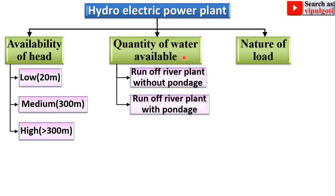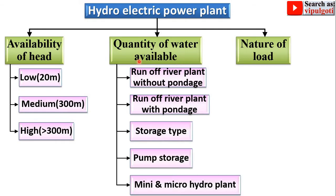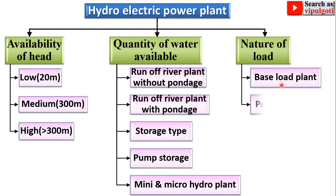According to the quantity of water available, it is further classified as: runoff river plant without pondage, runoff river plant with pondage, storage type, pump storage type, and mini and micro hydropower plant. According to nature of load, it is classified into two categories: base load plant and peak load plant.